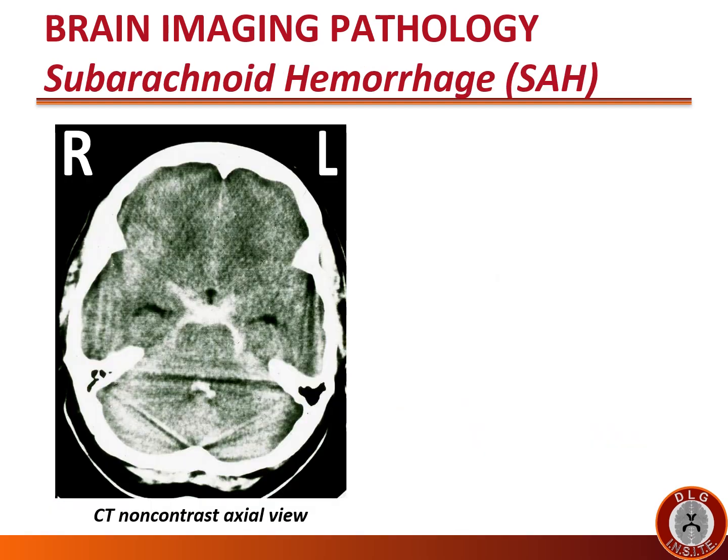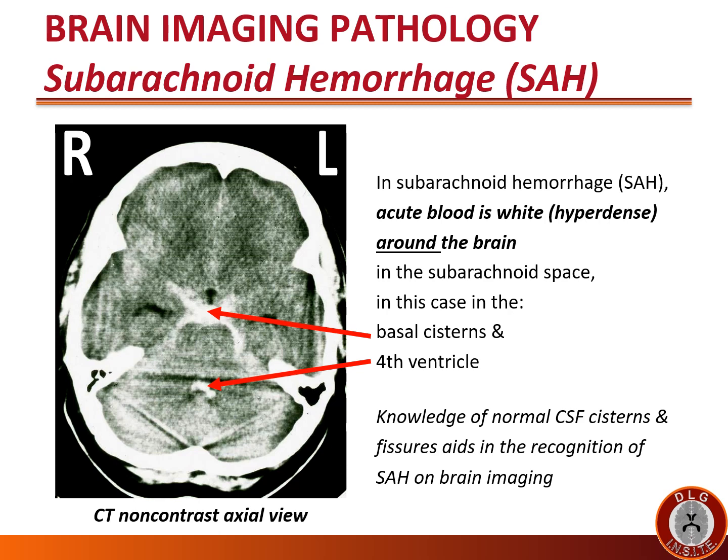Let's now look at bleeding around the brain — subarachnoid hemorrhage. In subarachnoid hemorrhage (SAH), acute blood is white and hyperdense around the brain in the subarachnoid space — in this case, in the basal cisterns and fourth ventricle. It is very important to have a knowledge of normal CSF, cistern, and fissure anatomy, as this aids in the recognition of subarachnoid hemorrhage on brain imaging.